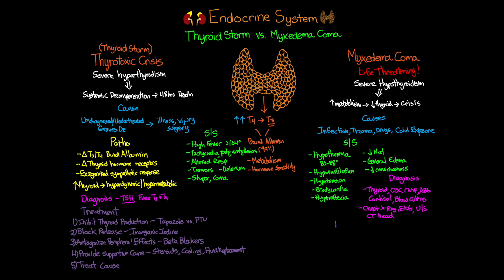Treatment for myxedema coma involves four things: first, hormone replacement; second, correct fluid and electrolyte balance; third, supportive care; and fourth, identify and treat the precipitating cause.